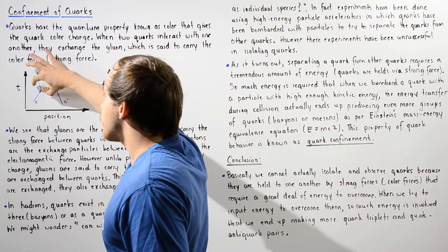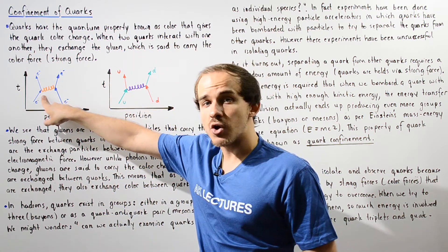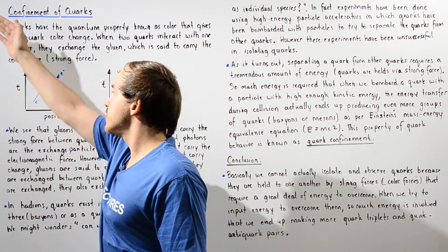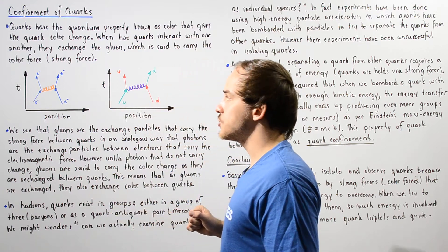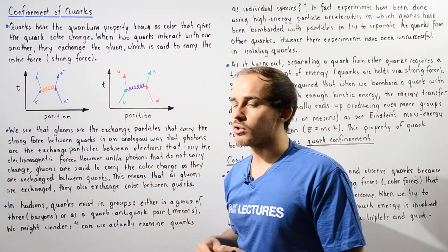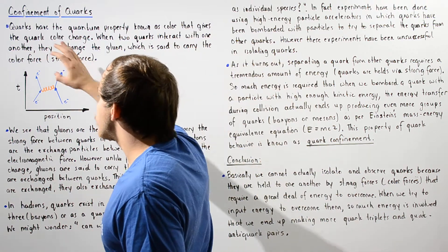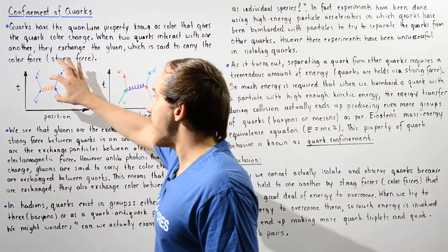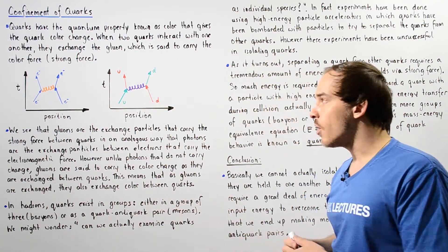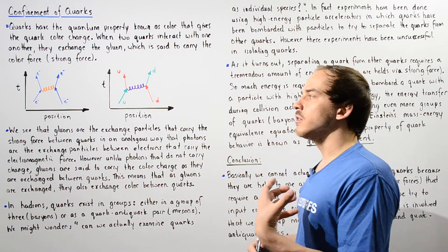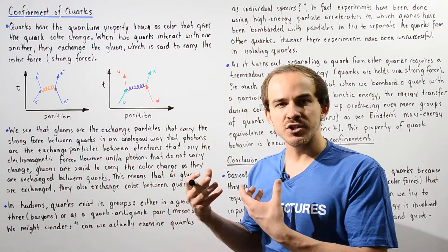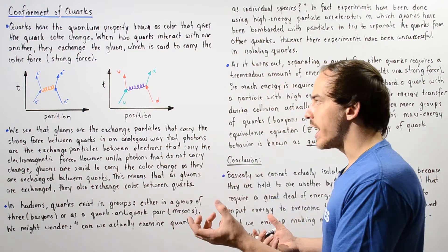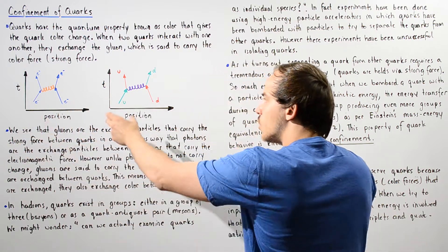When the virtual photon is released by electron one, to conserve momentum, electron one recoils and travels in this direction. When the second electron absorbs that photon, it also recoils to conserve momentum. We say that this virtual photon is a fundamental particle that carries the electromagnetic force that exists between particles that have charge.